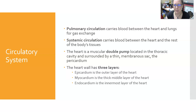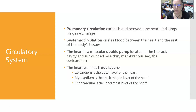The heart is a muscular double pump located in the thoracic cavity, surrounded by a thin membranous sac called the pericardium. It is a double pump because there are two sides — the right and the left — and it pumps into two circuits: the pulmonary circuit and the systemic circuit. The heart wall has three layers: the epicardium (outer layer), the myocardium (thick muscular middle layer), and the endocardium (innermost layer).